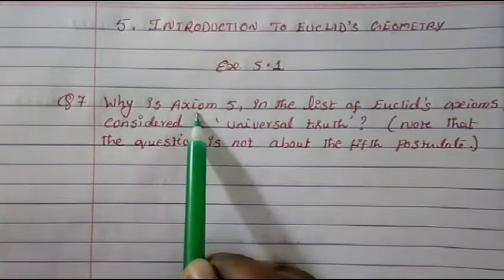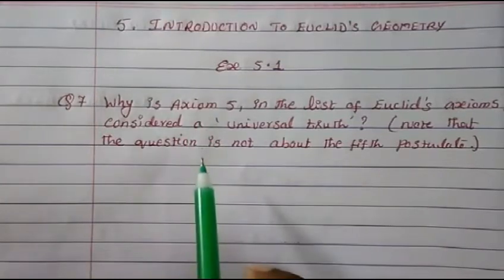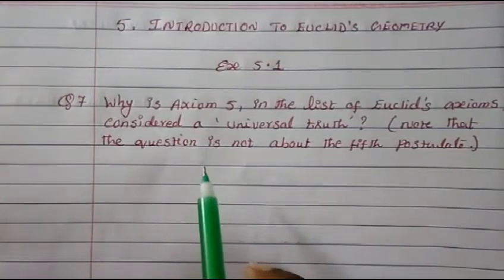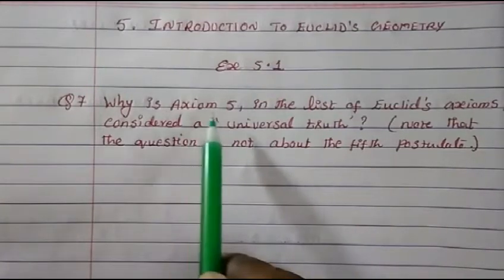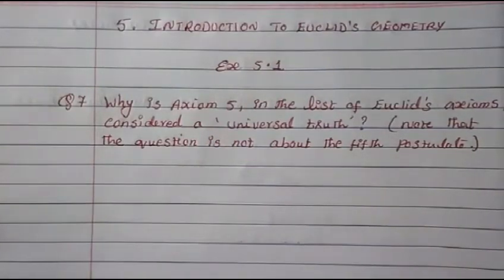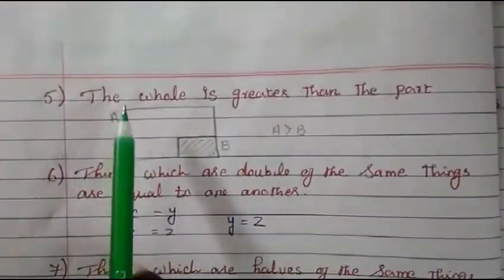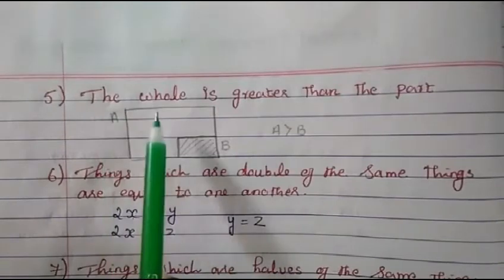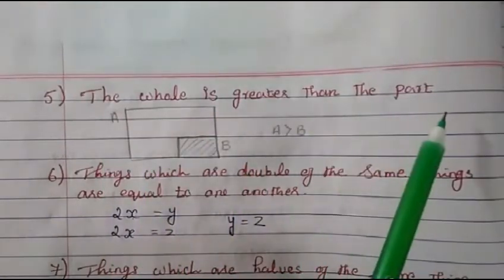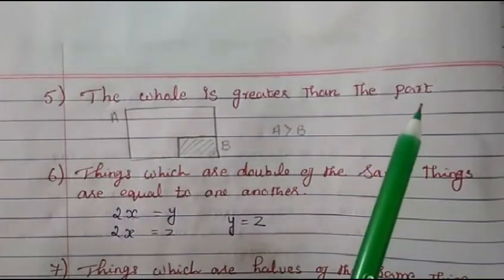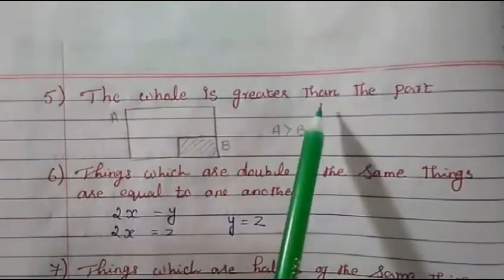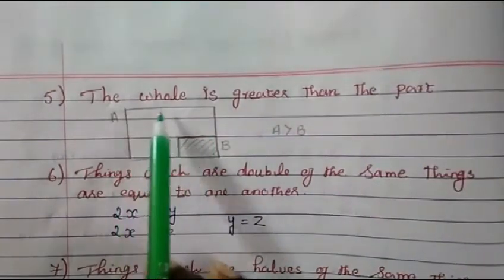I have already explained the axioms and postulates in the introduction part. So let's see what the fifth axiom is. The fifth axiom states: the whole is greater than the part. I have already explained this in the introduction.